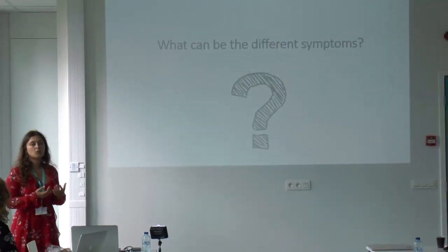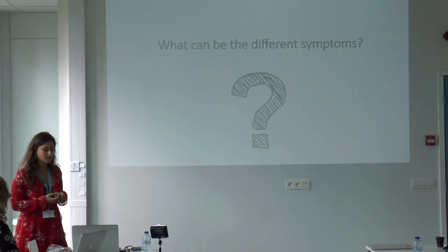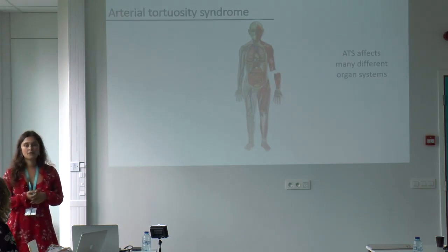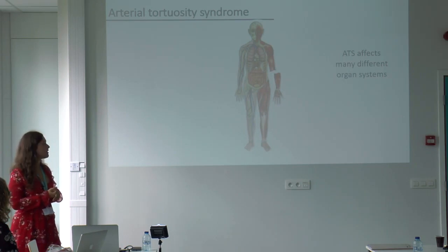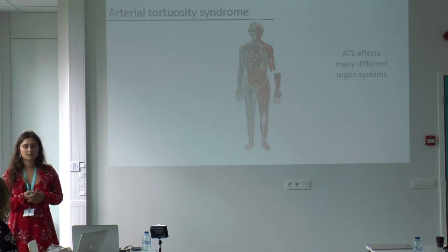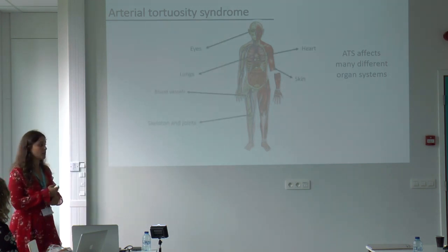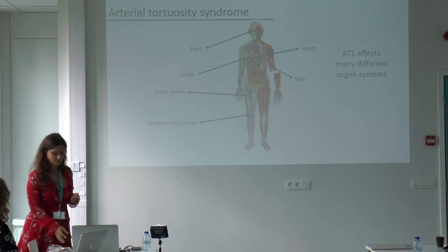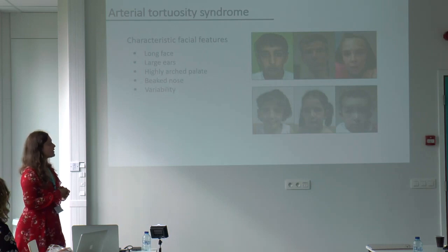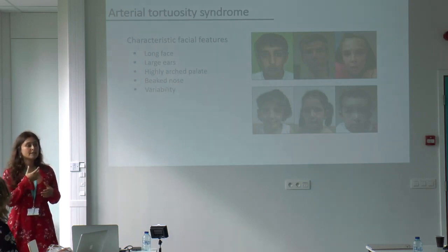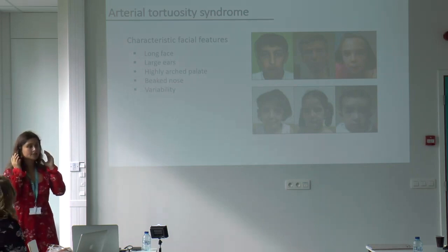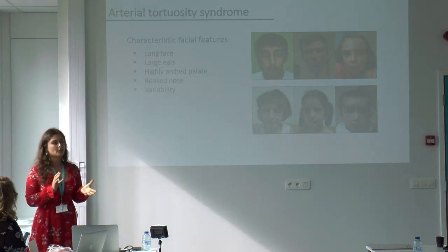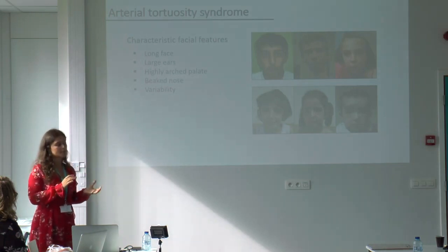Now, very important for you is to know what can be the different symptoms of arterial tortuosity patients. We recently made a study in a large cohort of 50 patients — for such a rare disorder, that was really a lot. We know that ATS affects many different organ systems: mainly the blood vessels and the heart, the skin, but also the eyes, the skeleton and joints, and the lungs. When we look at these patients, we see they have typical facial features: a long face, a big nose, rather large ears, and a highly arched palate. However, as you can see in the pictures, it can be quite variable — some people have more typical characteristics than others.